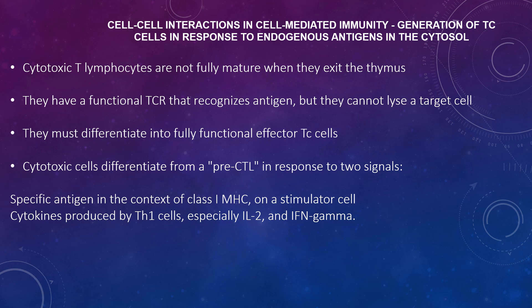Cytotoxic cell interactions in cell-mediated immunity: generation of cytotoxic T cells in response to endogenous antigen. Cytotoxic T lymphocytes are not fully mature when they exit the thymus. They have a functional TCR that recognises antigen, but they cannot lyse a target cell; they must differentiate into functional effector CTL cells. Cytotoxic cells differentiate from a pre-CTL in response to two signals: specific antigen in the context of class 1 MHC on a stimulator cell, and cytokines produced by Th1 cells, especially IL-2 and interferon gamma.